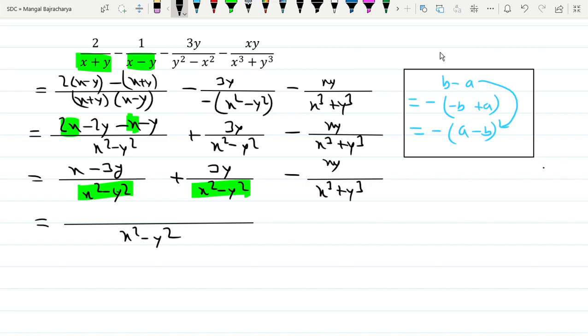So x minus 3y plus 3y, and minus xy divided by x³ plus y³. This is the same thing. So x² minus y² is x+y into x-y when you do...